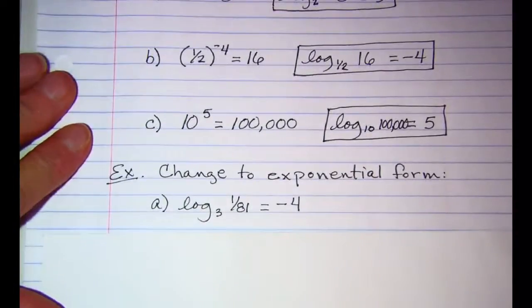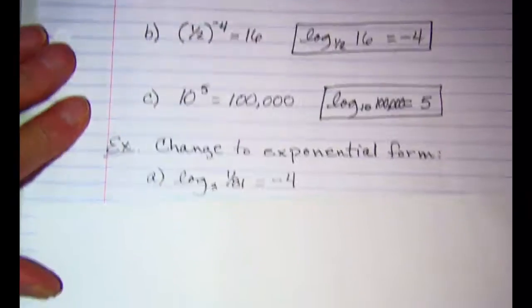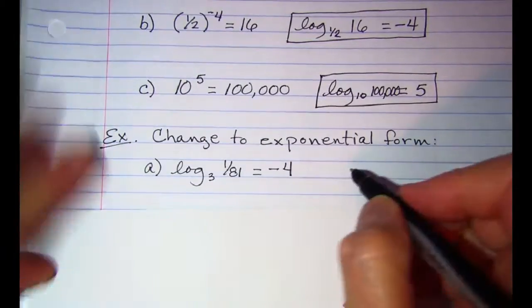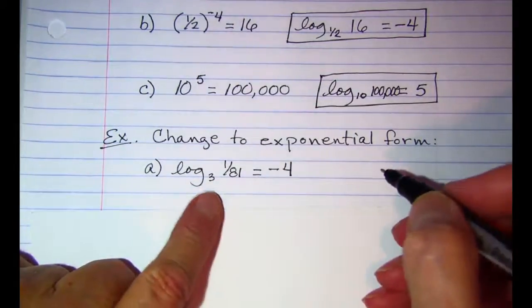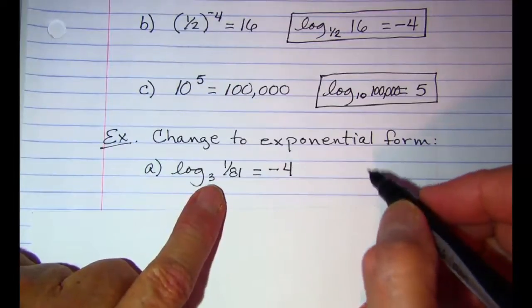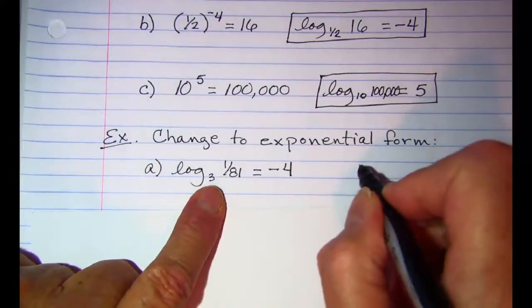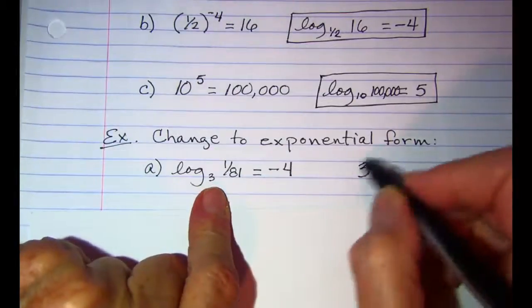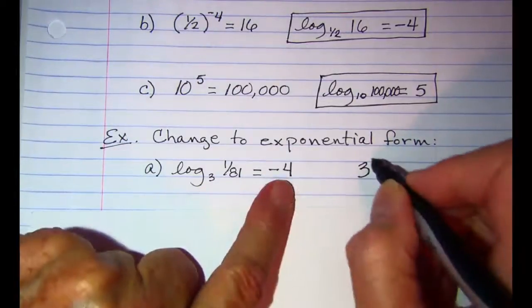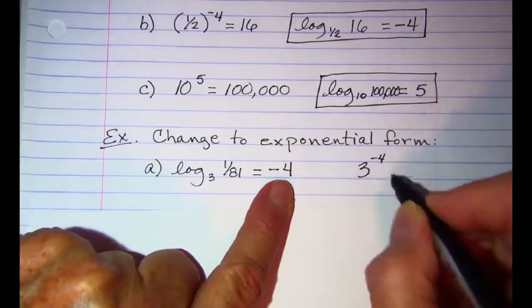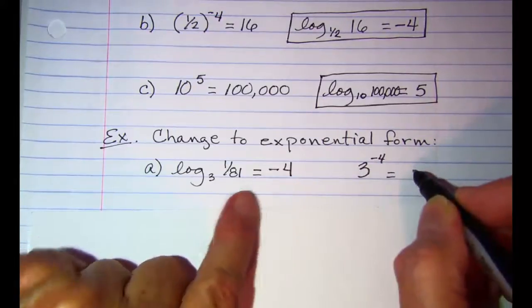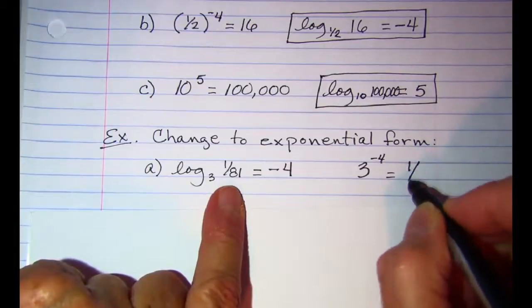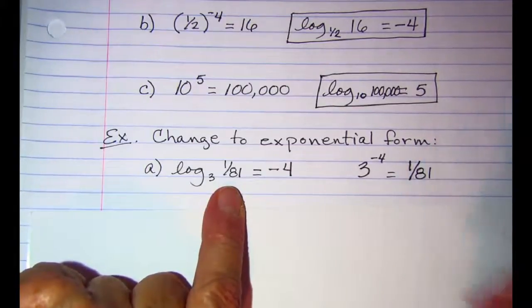Now let's change the other direction — we want to change to exponential form. Remember the base of our logarithm is the base of the exponential. The exponent of our exponential is going to be negative 4. And our argument of the logarithm is 1 over 81, so that's what our exponential is equal to.